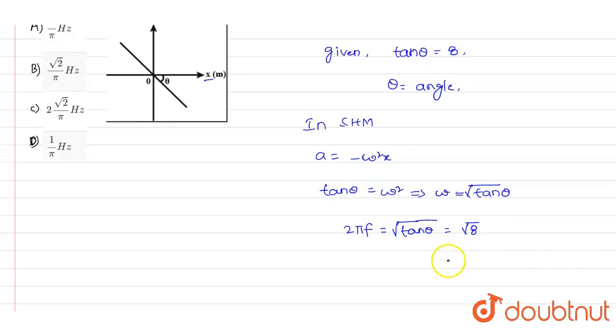Omega value is 2πf. We will write the value of the frequency f equals square root of 8 divided by 2π, so that will equal square root of 2 divided by π. Here f is the frequency of the oscillations.